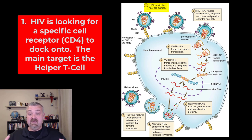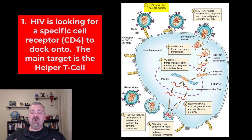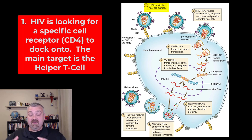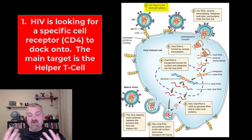If HIV was less discriminatory and went after all your cells, it would be like Ebola — killing people in days. The fact that it only targets certain cell types is why you can survive for years even without treatment. The bad news is it targets what I'd say is the most important immune cell we have: helper T cells — the generals of your immunity army. They're needed to activate cytotoxic T cells and to sensitize B cells, making them responsible for both arms of your adaptive immune response.